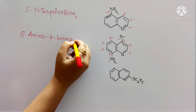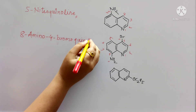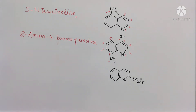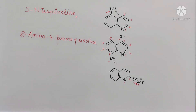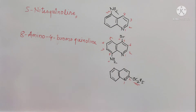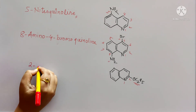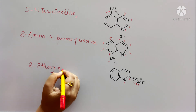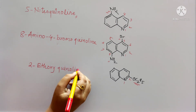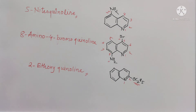Next, give numbering: 1, 2. To the 2nd position this group is attached. It is an ethyl group with oxygen attached, so it will be an ethoxy group attached to the 2nd position. The name will be 2-ethoxyquinoline.